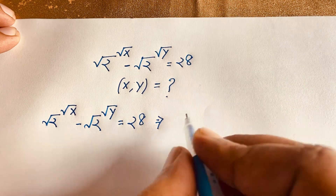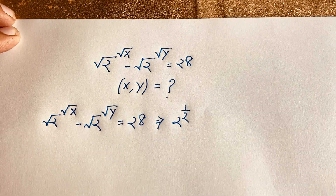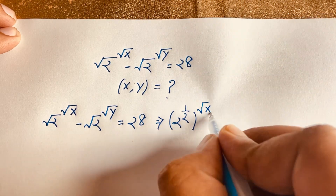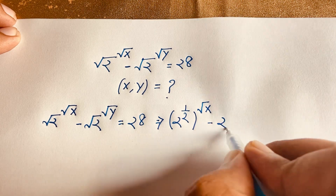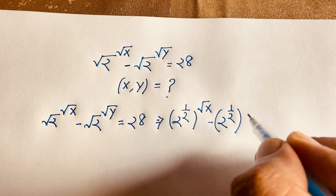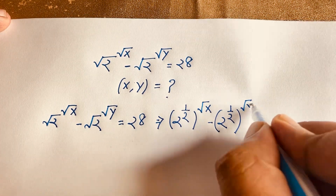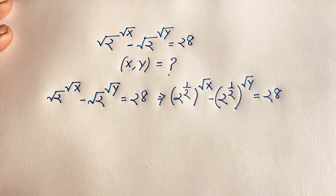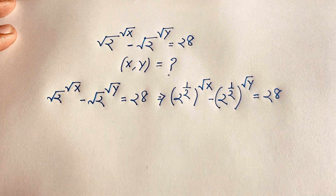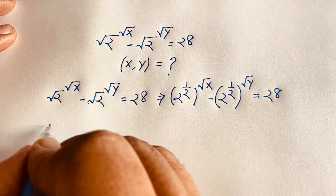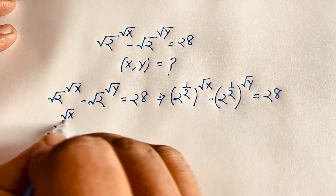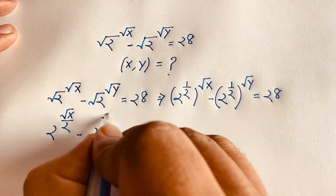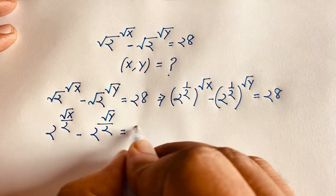We can rewrite √2 as 2 to the power of one half. So the expression becomes (2^(1/2))^(√x) minus (2^(1/2))^(√y) equals 28. Applying the exponential law by multiplying the powers, this becomes 2^(√x/2) minus 2^(√y/2) equals 28.